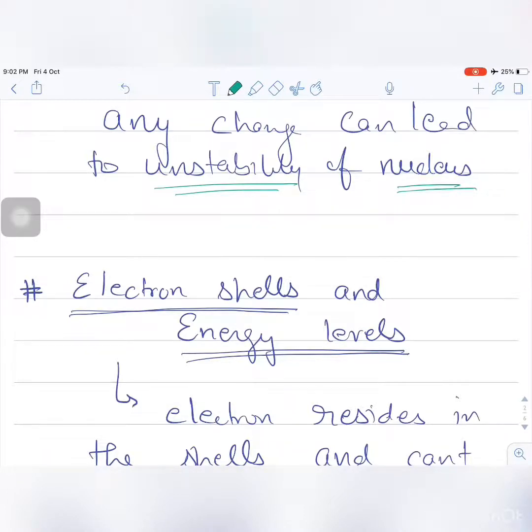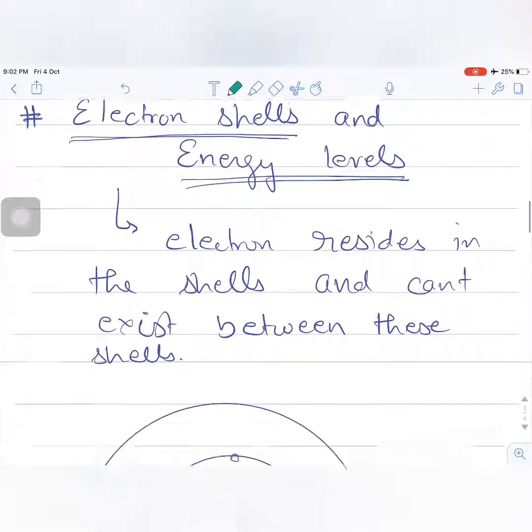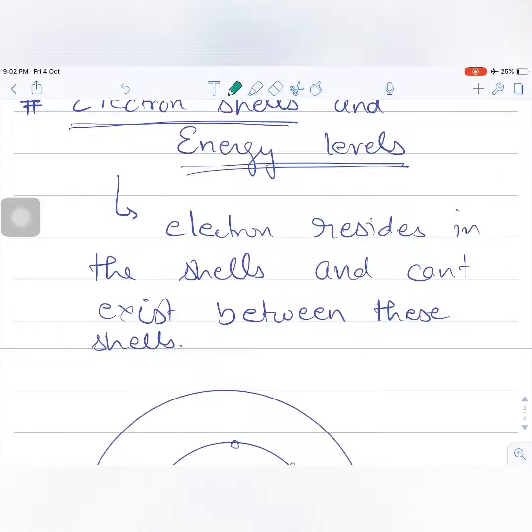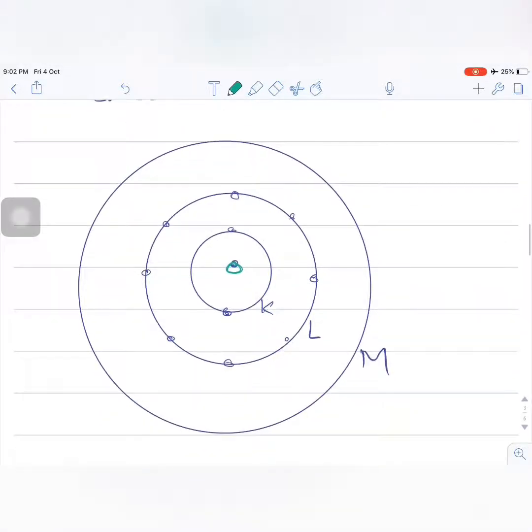The next thing we need to understand is electron shells and energy levels. Electrons reside in shells and cannot exist between these shells. The inner part is the nucleus, and outer to it is the innermost electron shell K, then L, M, N, O, P shells.